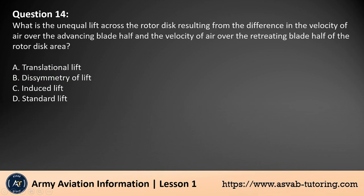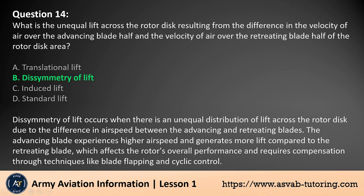Question 14. What is the unequal lift across the rotor disc resulting from the difference in the velocity of air over the advancing blade half and the velocity of air over the retreating blade half of the rotor disc area? A. Translational lift. B. Dissymmetry of lift. C. Induced lift. D. Standard lift. The answer is B.